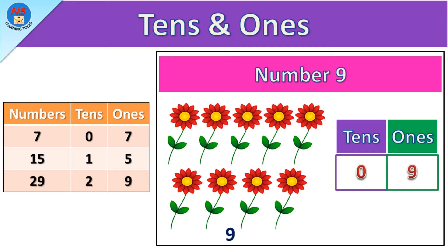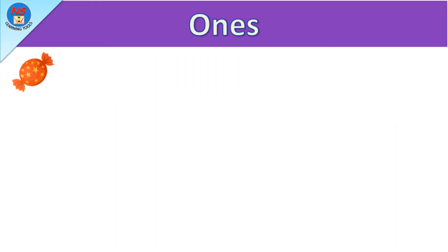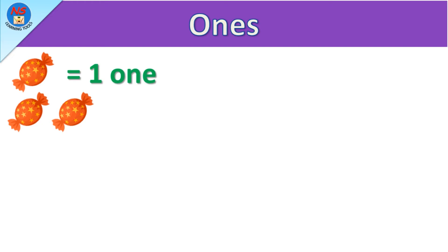Hello friends, how are you? In this video we will learn about tens and ones. So let's go. Ones: here we have one candy, means one one. Here we have two candies, means two ones.